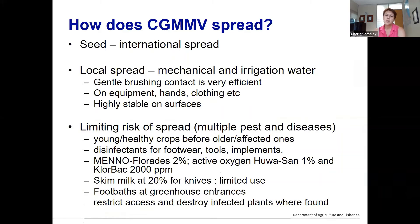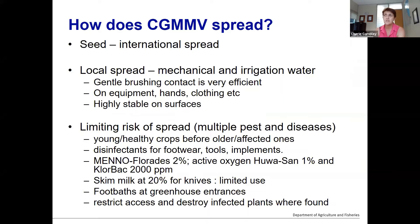How does CGMMV spread? It's spread around the world in seed — that's pretty well known. Locally, if it is in your crop or on your property, spread will be through mechanical means — through touch or through irrigation water. It only needs gentle contact or gentle brushing to spread the virus, and that's in fact the more efficient way. The fine hairs on the back of cucurbit leaves have very high levels of the virus and it moves very quickly between plants. This can be on equipment, hands, and clothing. It's very stable on surfaces and is highly contagious.